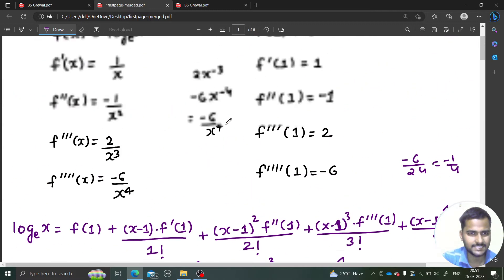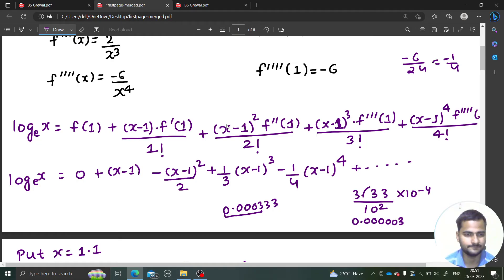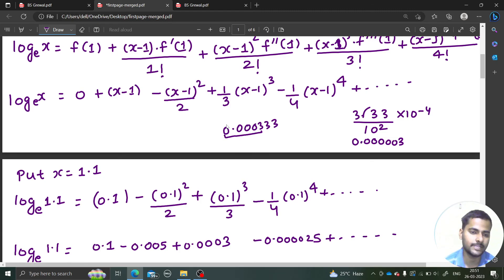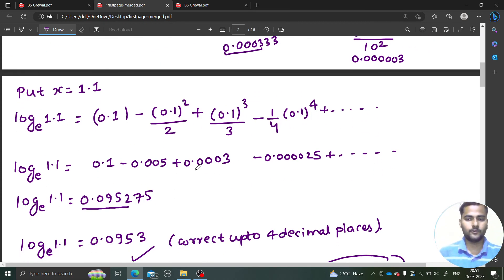So as you can see we expanded log x in powers of x minus 1 using Taylor series. We need derivative function and value of function at 1 because x minus 1 in terms of x minus 1 we need to expand, and then we expanded simplified and then because they are asking log 1.1 to the base e, we put 1.1 wherever there was x and the final answer is 0.0953 up to 4 decimal places. That's it for today, we will see you with some more problems. Thanks again.